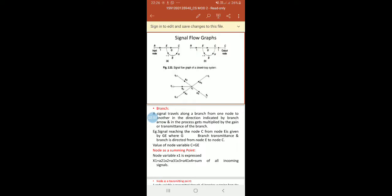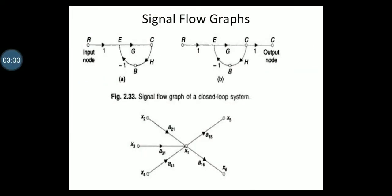Where GE is the branch transmittance and the branch is directed from node E to node C. So the value of node variable C is equal to GE. The signal reaching node C from node E is given by GE.